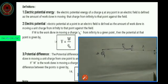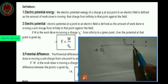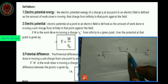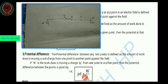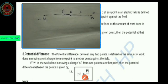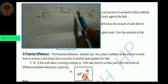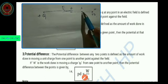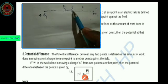We considered two points, A and B. Is the potential at A and B the same? No, because we are doing different amounts of work to reach point A and point B. Therefore there is a potential difference between these two points. The potential difference between any two points is defined as the amount of work done in moving a unit charge from one point to another against the field. Work done to move a unit charge from infinity to B is more because the opposition is more at B, but at A the opposition is less, so work done is less.